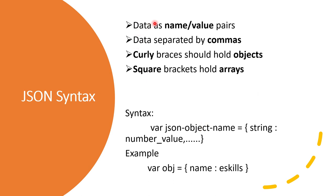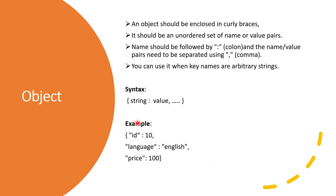This is the JSON syntax: you have a curly bracket, then you have the name-value pair which are separated by commas. It starts with a curly bracket that holds the object, then there is a square bracket that holds the array. For example, if you save variable obj then you have to give the key-value pair. An object should be enclosed in curly braces and it should be an unordered set of name or value pairs.